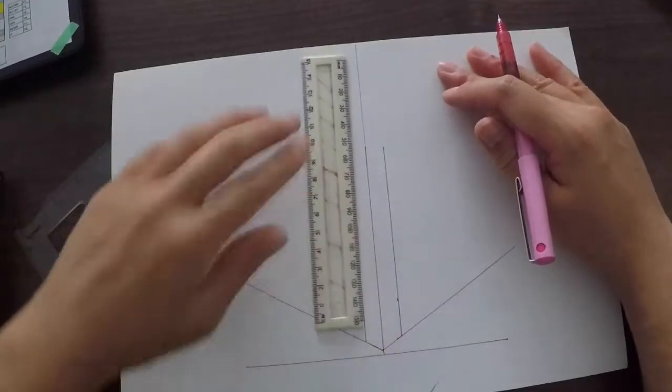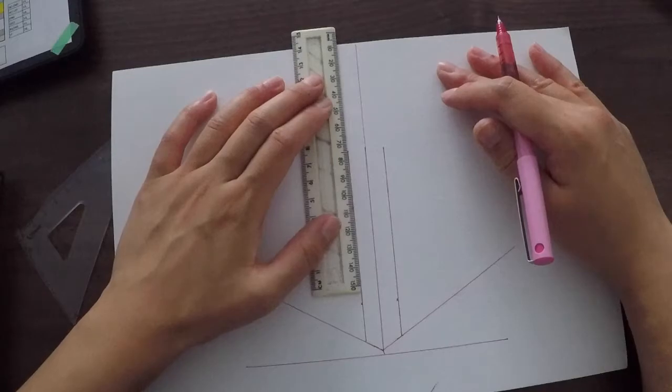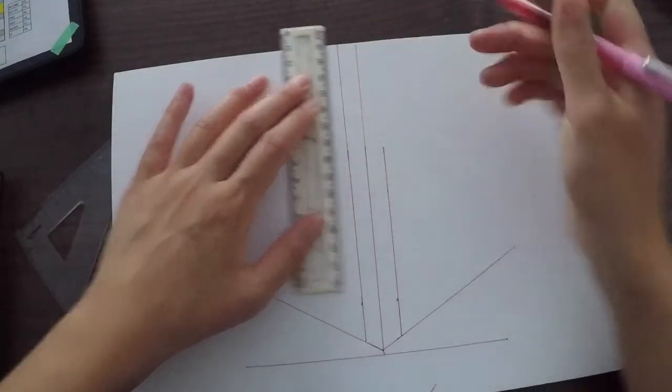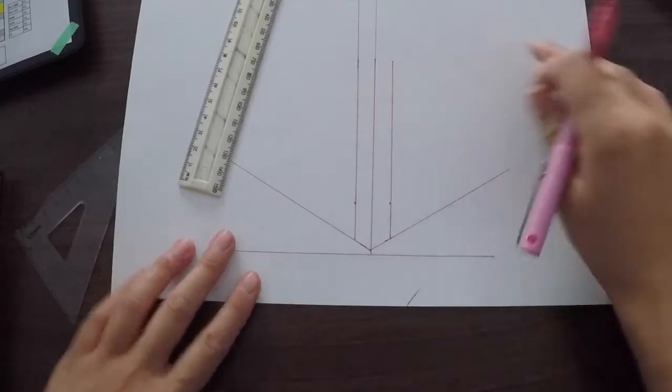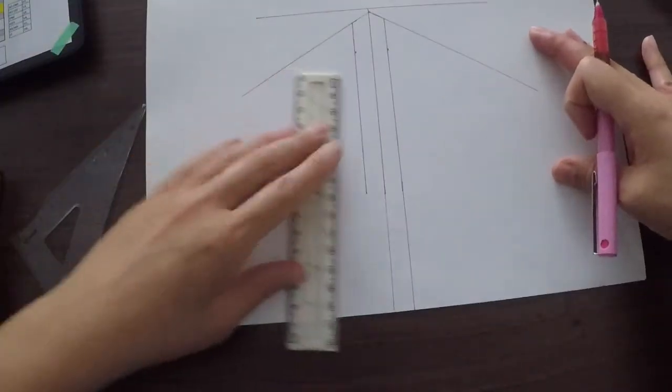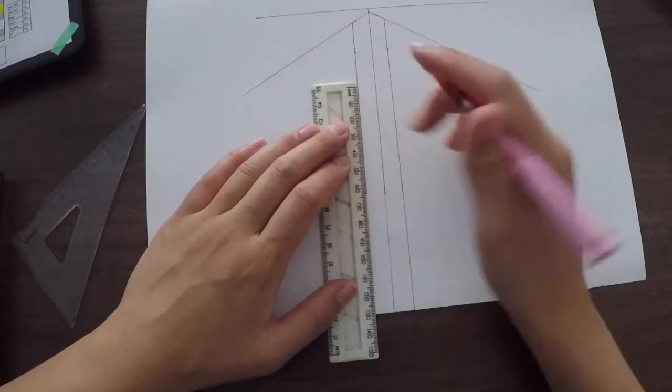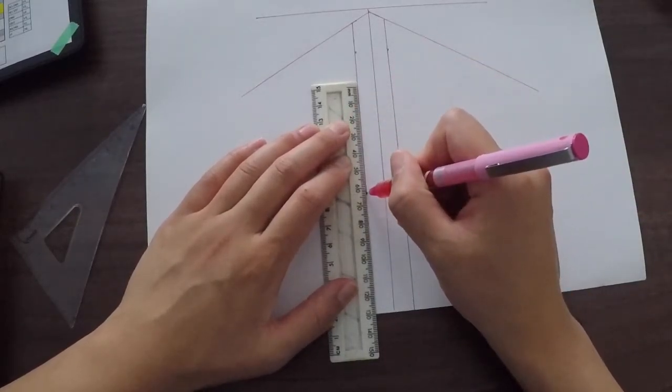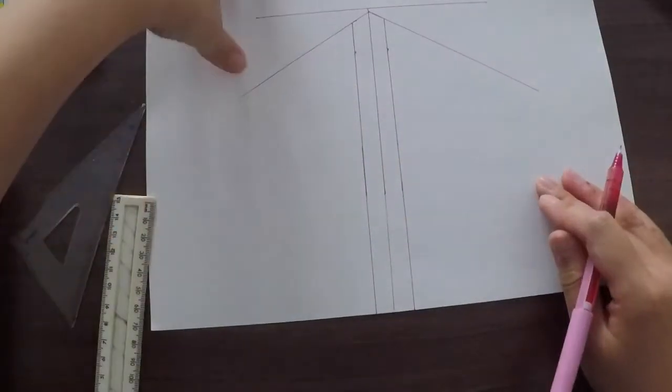And then you can use a ruler if you like to continue that vertical line. As you can see, because we measured it, these three lines are completely vertical to one another, which shows that you have done your vertical lines correctly. So essentially, any line you make, it needs to be parallel to the line next to it.